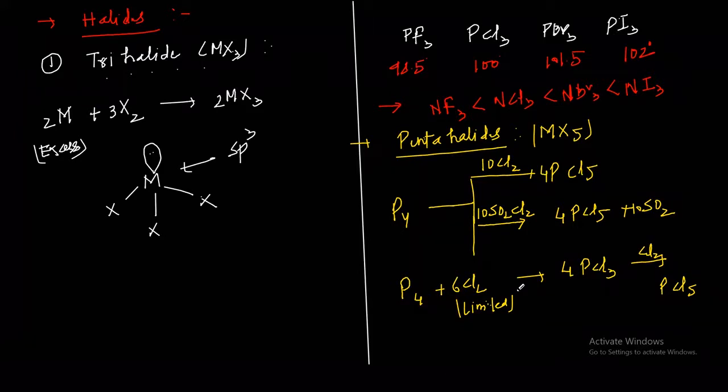All pentahalides behave as Lewis acid due to presence of vacant d orbital. These are the compounds formed by the elements of group 15 - the halides we have discussed.